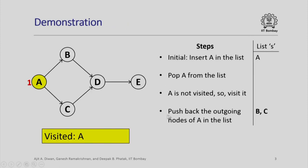Let us look at the demonstration. Initially we insert A in the list, pop A from the list, since A is not visited, so visit it. When we visit A, we will find out the outgoing edges. There are two edges B and C, they will come in that order and they will get pushed onto the list S.